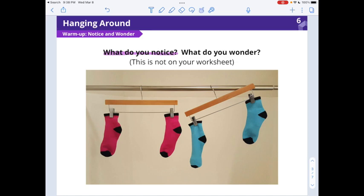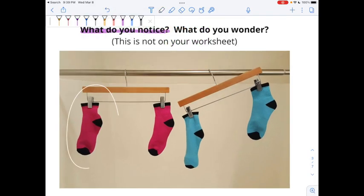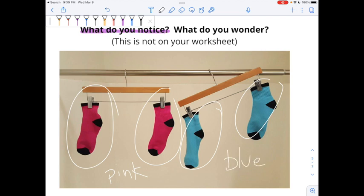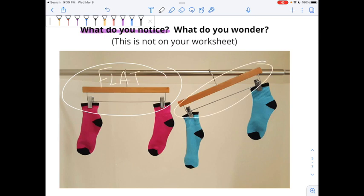Okay, let's see if something you noticed is the same as something that I noticed. Something that I noticed right away is that the socks on these hangers are pink and the socks on the other hangers are blue. That sticks out to me right away. Something else that I notice is that the hanger on the left, this hanger here, is flat across, and this hanger over here is tilted.